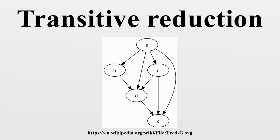The total number of edges in this type of transitive reduction is equal to the number of edges in the transitive reduction of the condensation, plus the number of vertices in non-trivial strongly connected components. The edges of the transitive reduction that correspond to condensation edges can always be chosen to be a subgraph of the given graph G. However, the cycle within each strongly connected component can only be chosen to be a subgraph of G if that component has a Hamiltonian cycle, something that is not always true and is difficult to check. Because of this difficulty, it is NP-hard to find the smallest subgraph of a given graph G with the same reachability.